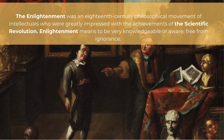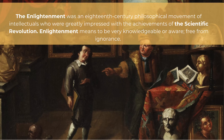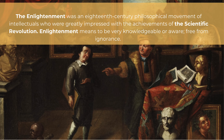So what was the Enlightenment in the first place? It stems from the scientific revolution. It was an 18th century philosophical movement of intellectuals who were greatly impressed by the achievements of the scientific revolution. Enlightenment by its actual word means to be very knowledgeable, aware, and free from ignorance. At this time, Europeans started really delving into questioning everything.